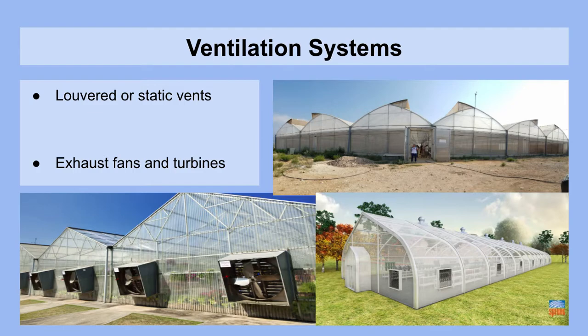Now it's time to take a look at ventilation systems. Louvered or static vents on the roof or the side walls of a greenhouse are ways to allow air out passively, either through thermodynamics or pressure. Air moves from lower to higher temperatures and from higher to lower pressures. To actively ventilate greenhouses, you need exhaust fans or turbines. Fans can be seen on greenhouse end wall gables, and turbines at the top ridge of a greenhouse pull out hot air using wind power.